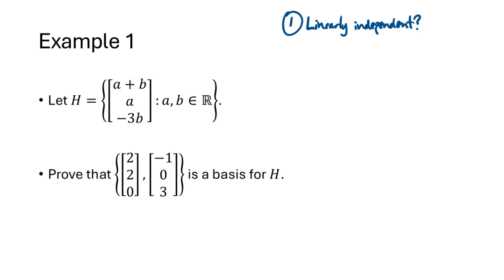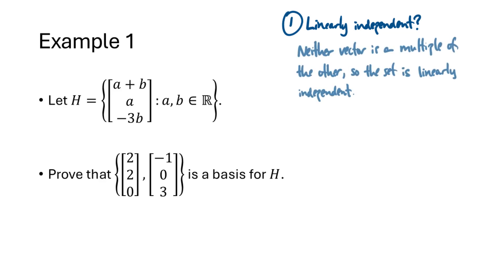Let's start with linear independence. We could take the vectors and put them into a matrix, row reduce, and check for a pivot in every column. However, from Lecture 16, when a set has two vectors, all we need to do is check whether those vectors are multiples of each other. In this case, neither one of these vectors is a multiple of the other, so this set is linearly independent.